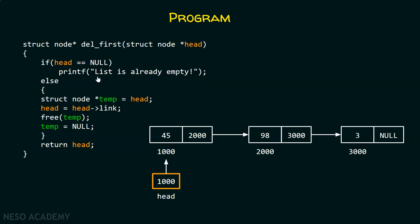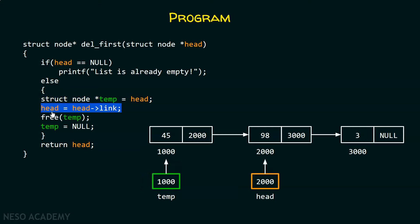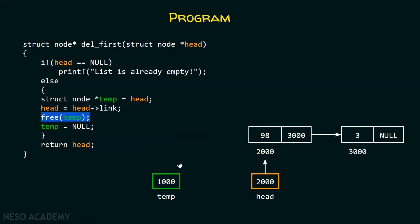Otherwise, we do this procedure: we create a temp pointer which will point to the first node of this list, then we move our head pointer towards the right, and then we free the memory of this node — that is, we delete this node. You can see that temp still contains address 1000, which is now an invalid memory location because we have deleted that node. That is why we must assign null to temp, and then finally we return head.